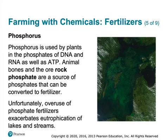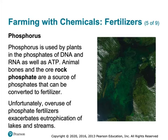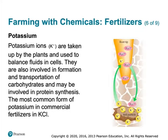One problem with phosphates is they can cause eutrophification, and this is true for all fertilizers. In the United States, algae will grow until limited by some nutrient. In the Mississippi River it tends to be phosphate, and phosphorus causes eutrophification in the Mississippi River Valley. In the Gulf of Mexico, algal blooms in spring runoff come from nitrate fertilizers.